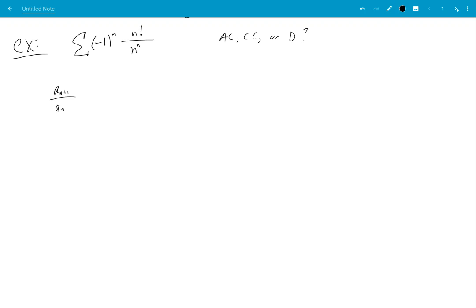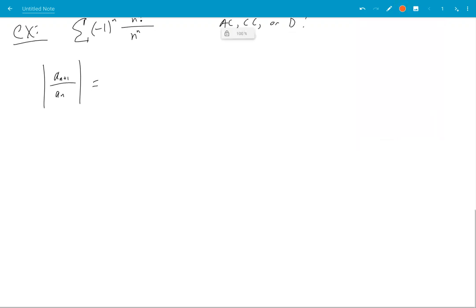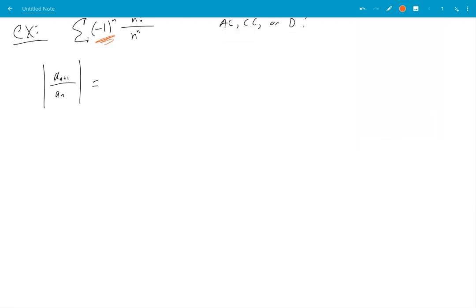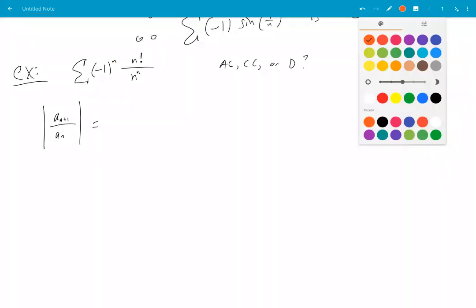A n plus 1 divided by a n absolute value. Okay, the absolute value just kills, you know, it kills this alternating factor. So I'm not going to even copy it here.